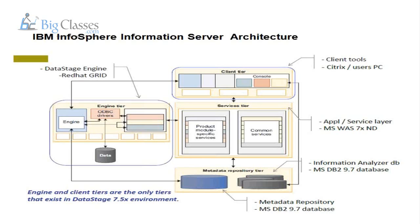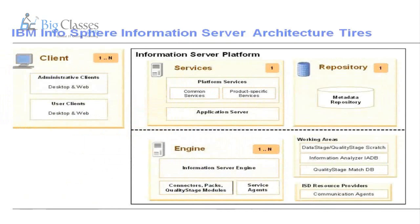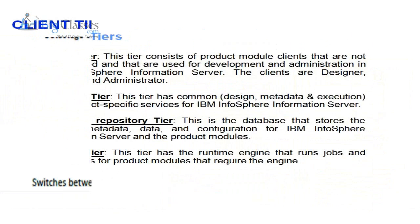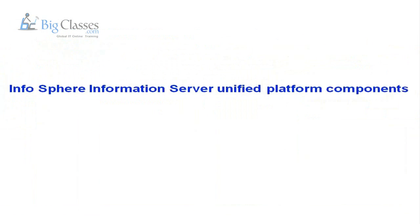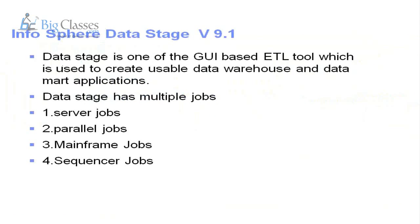From the latest versions of DataStage, the client tier runs on Windows machines, the services tier runs on Unix or Linux, and the engine is 99% on Linux or Unix. In real time the engine machine is always on Unix or Linux, but for practice we can also install on Windows. We will discuss all these tiers — client, services, engine, and metadata repository.